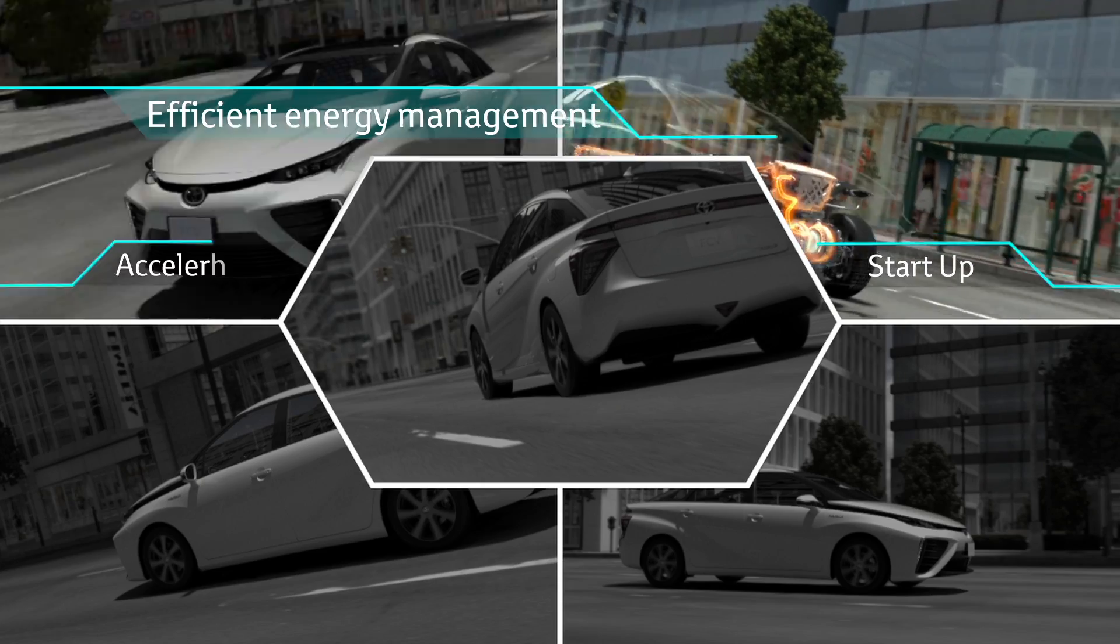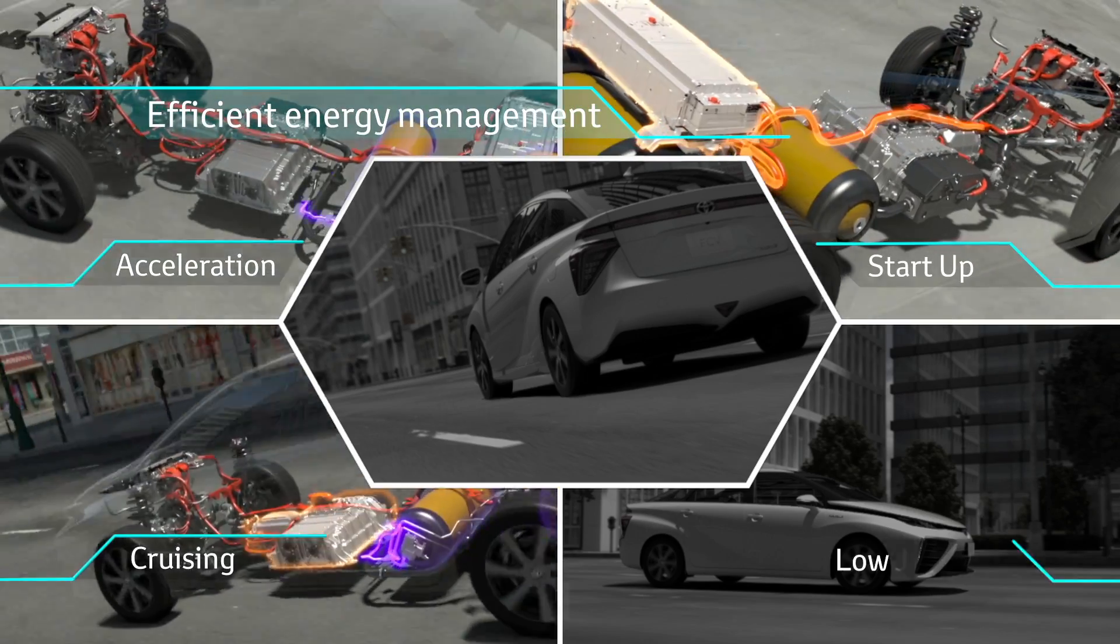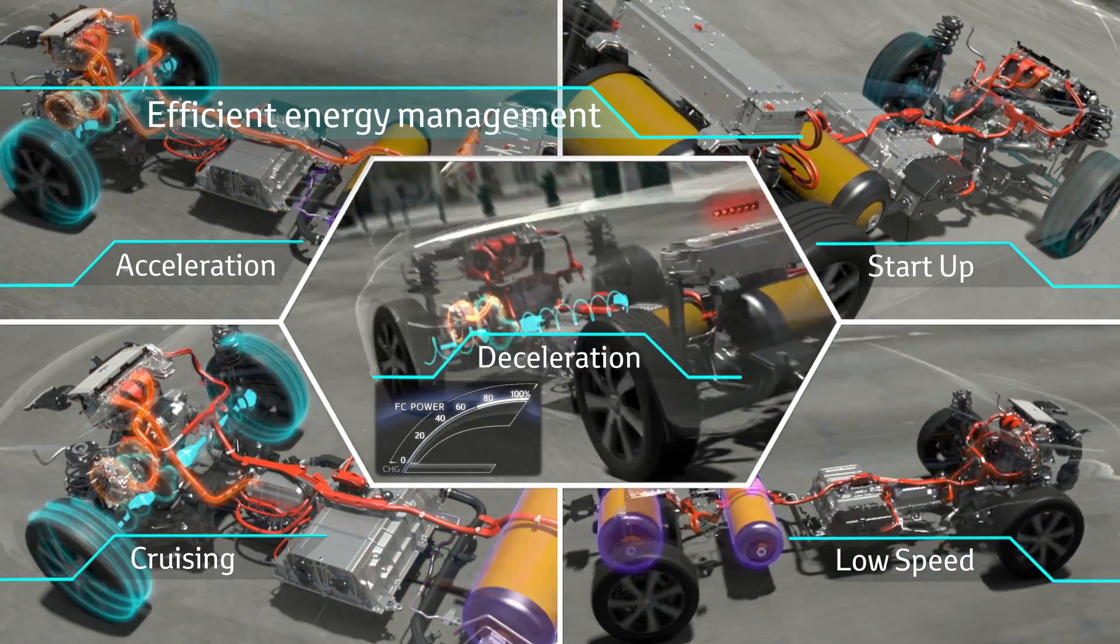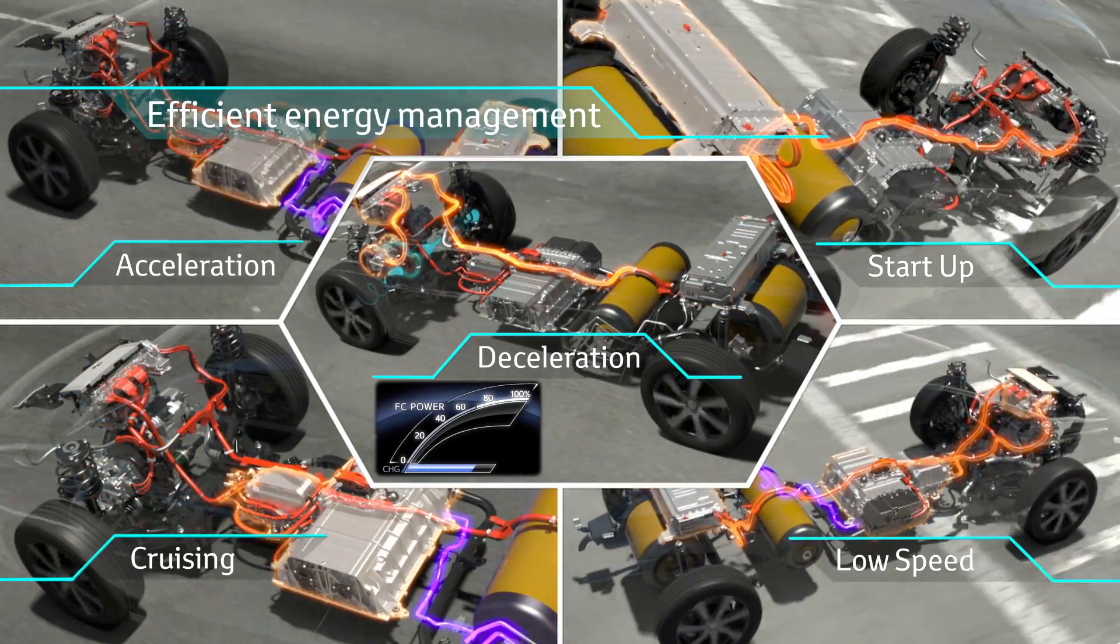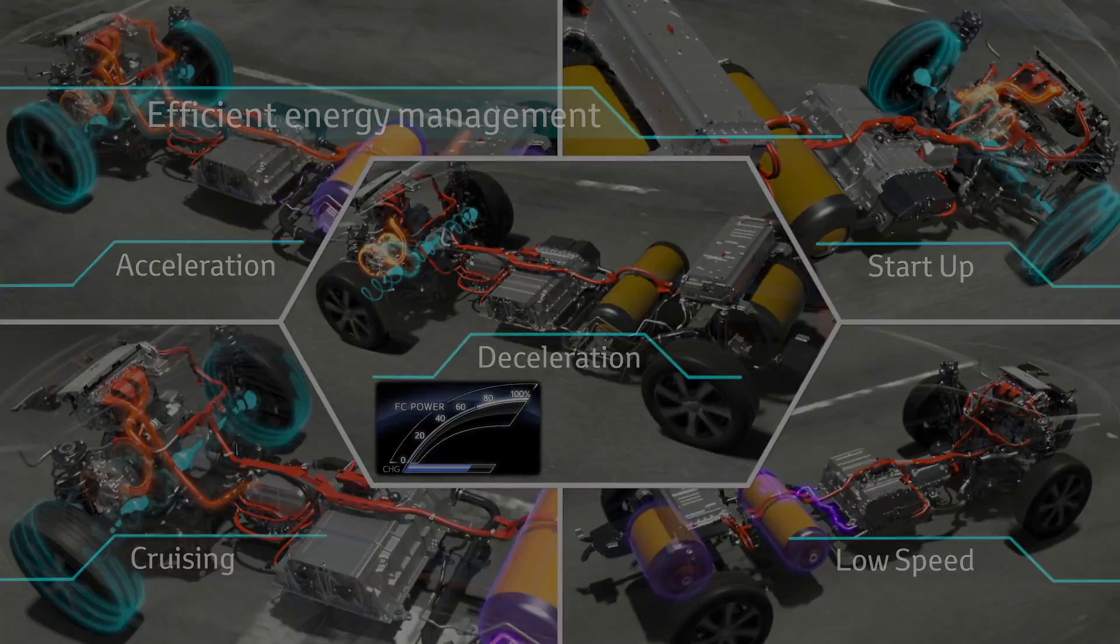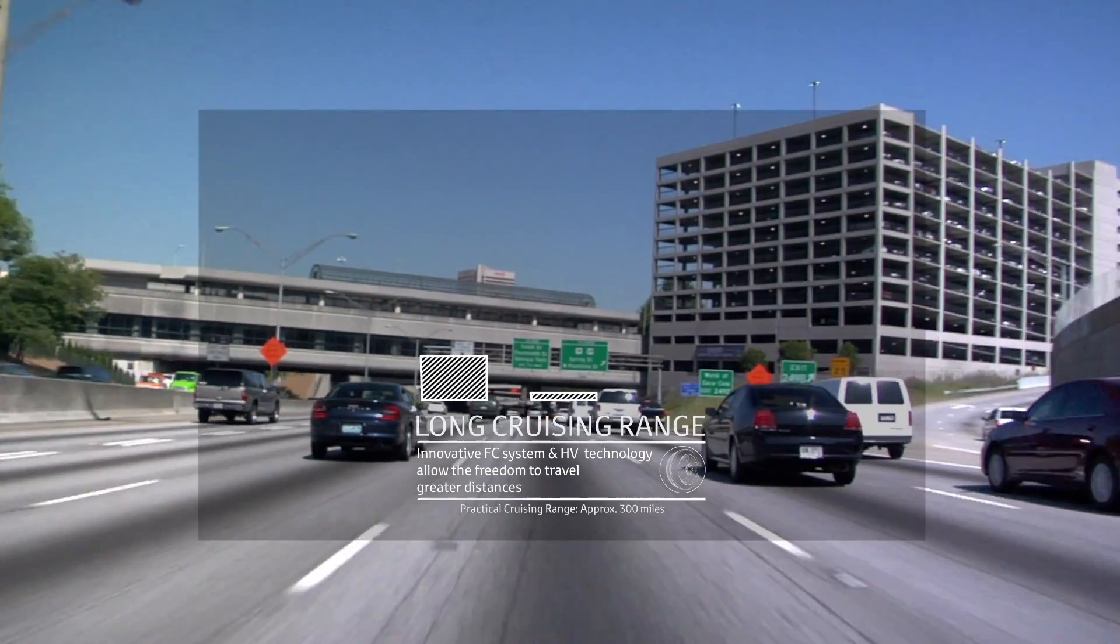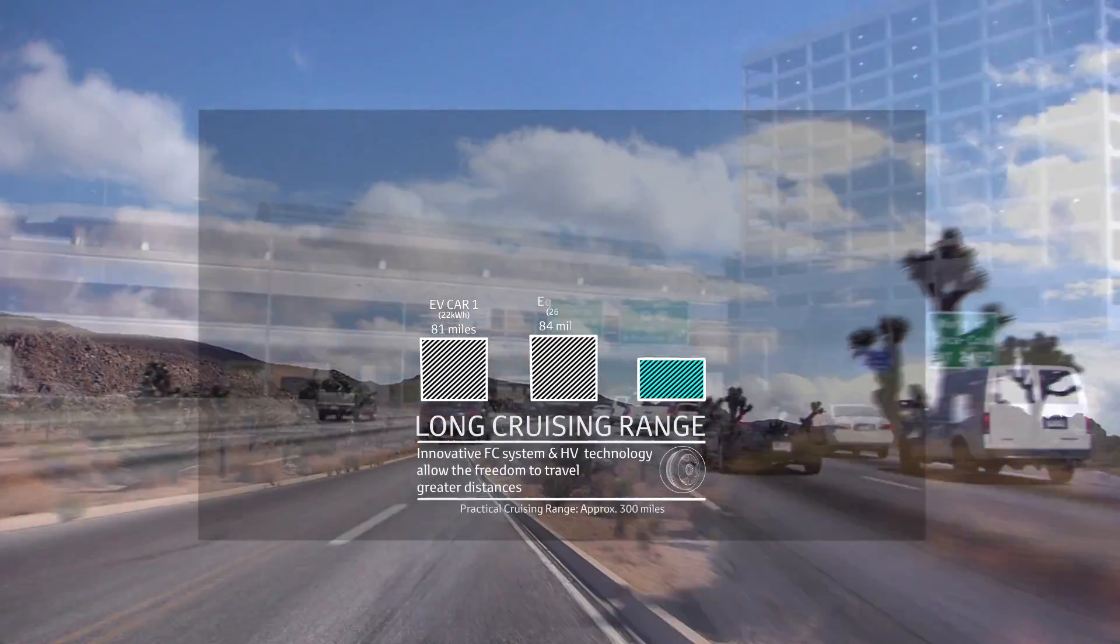FCV controls the electricity created by the fuel cell using technology developed from the hybrid vehicle. The motor works as a generator, gathering energy when the car speed is low. This accumulated energy is stored in the battery to support the fuel cell when accelerating.